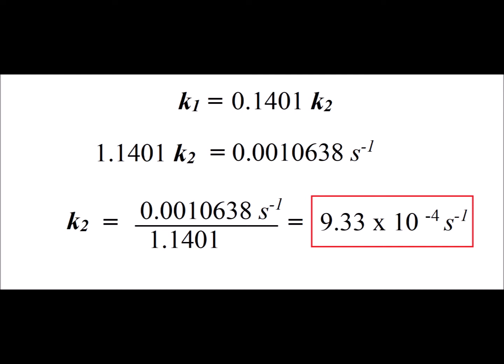We can simply solve for k2 and we get that our calculated value for k2 is 9.33 times 10 to the minus 4 inverse seconds. And if we compare that to the value that we used to generate the data in the first place, this is excellent agreement.